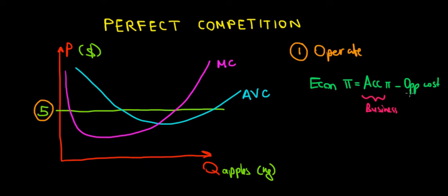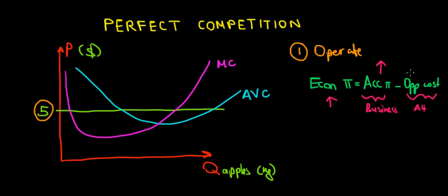The opportunity cost is our next best choice — our next best alternative. Economic profit is the difference between them. If we want to maximize economic profit we want to have as much accounting profit as possible, because the opportunity cost stays fixed. For example, if instead of selling apples we could sell bananas, whatever profit we'd have from bananas would be the opportunity cost.